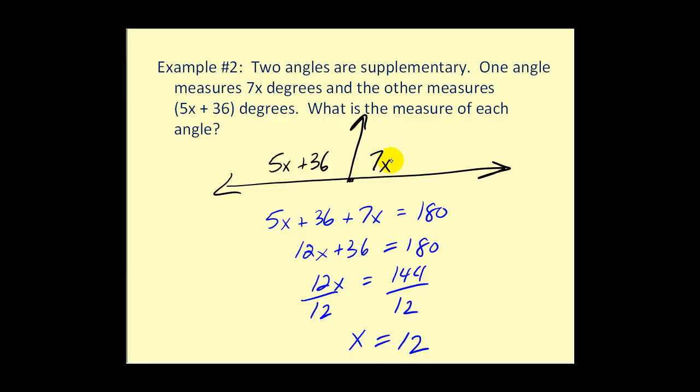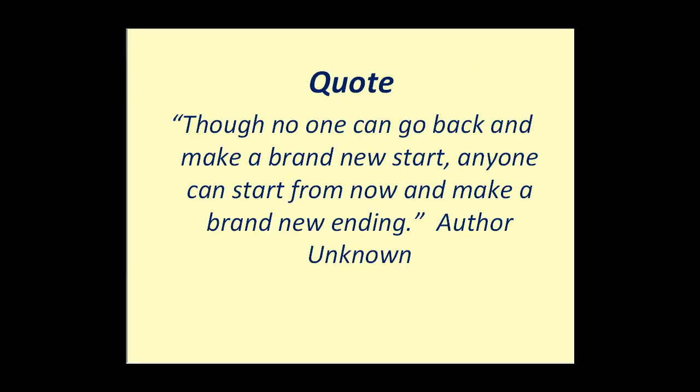So if x is twelve, seven times twelve would give us eighty-four degrees here. And then when I replace x with twelve here, five times twelve plus thirty-six would be ninety-six degrees. I hope you found this video helpful. Thank you for watching.